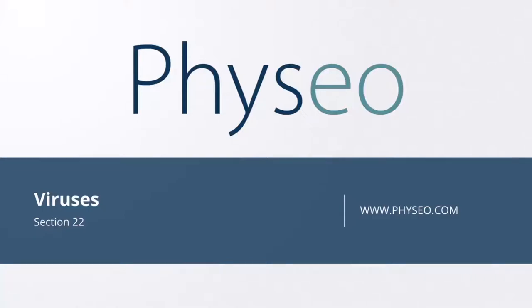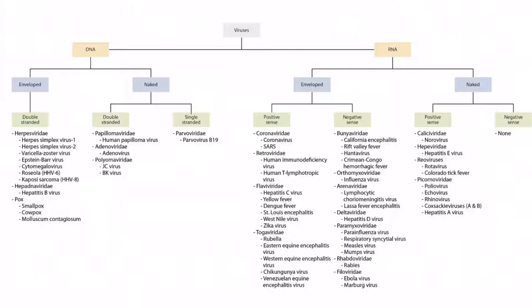Welcome to Section 22 of Viruses. This is our virus overview figure, and in this video we'll be discussing most of the toga viruses, including Eastern, Western, and Venezuelan equine encephalitis viruses and chikungunya virus. You can see all of these right here.